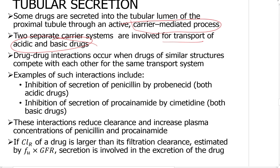One acid drug can compete with another acid drug; one basic drug competes with other basic drugs. Examples of such interactions include: inhibition of secretion of penicillin by probenecid (both are acidic drugs), and inhibition of secretion of procainamide by cimetidine. These interactions reduce clearance and increase plasma concentration of penicillin and procainamide.